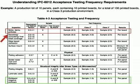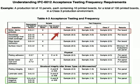Our first example — we're actually going to have two — relates to inspecting for nicks, dents, or pinholes in printed boards. This is with Class III, so to determine what we need to evaluate, we see that for Class III, our AQL level is 2.5.